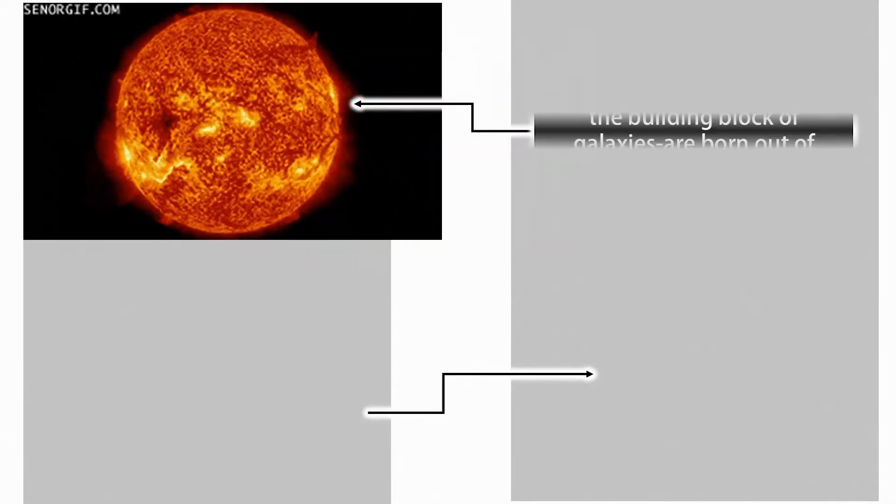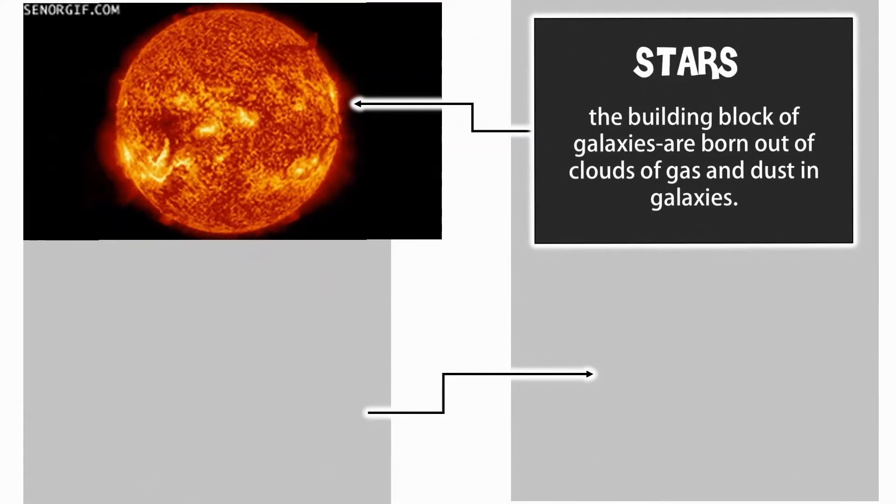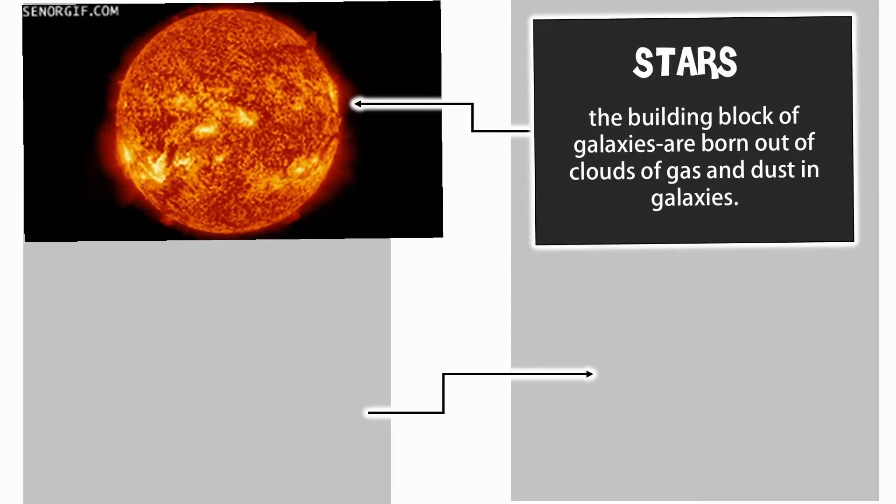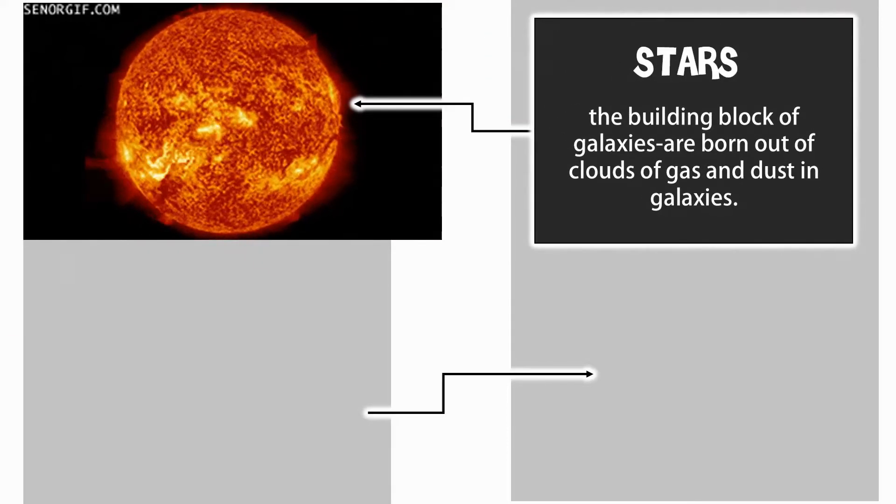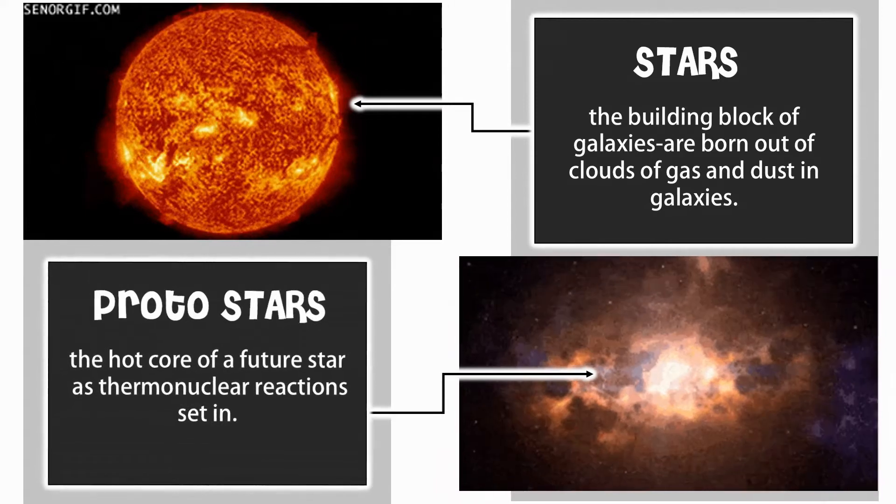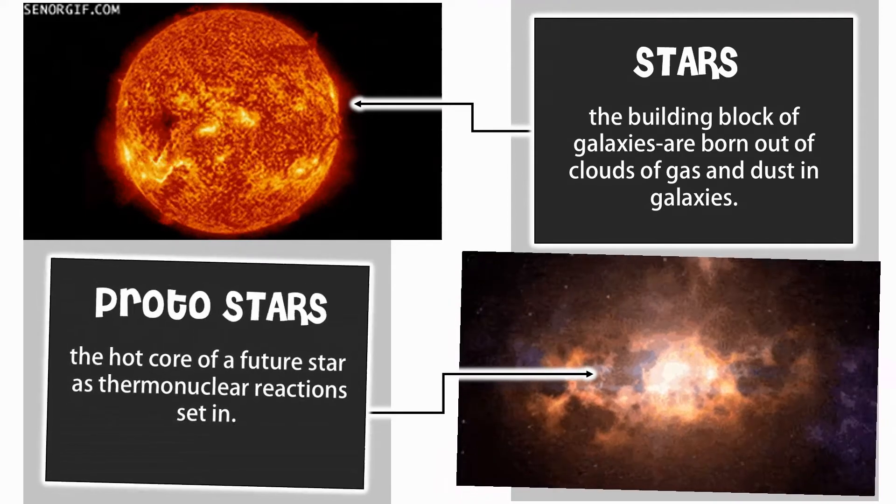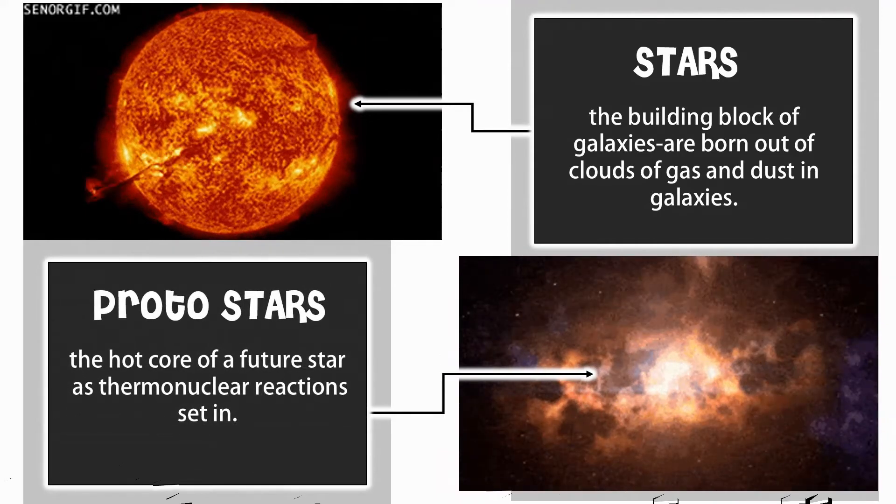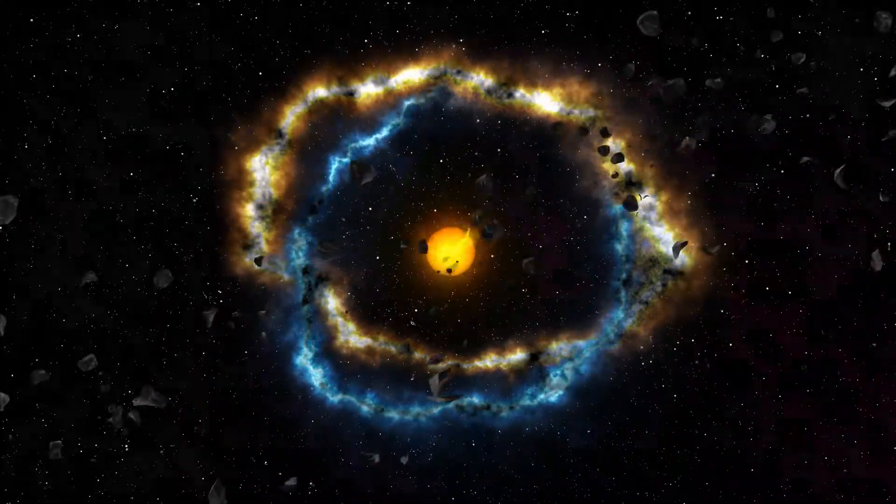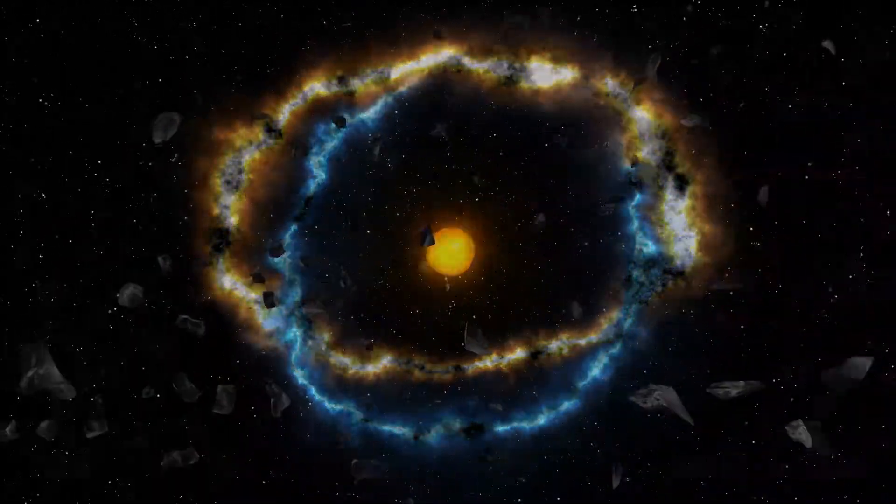Stars, the building blocks of galaxies, are born out of clouds of gas and dust in galaxies. Instabilities within the clouds eventually result in gravitational collapse, rotation, heating up, and transformation into a protostar—the hot core of a future star where thermonuclear reactions set in.